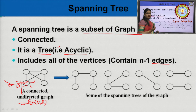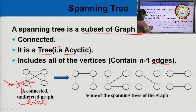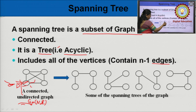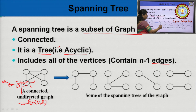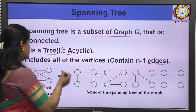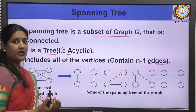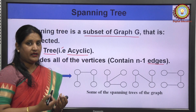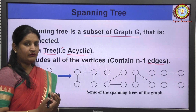A single graph can have more than one spanning tree. This is a connected undirected graph and it has a spanning tree containing all the vertices 1, 2, 3, 4 and connected with minimum number of edges. With 4 vertices, the minimum number of edges is n minus 1, so a tree has n minus 1 edges with n number of vertices.